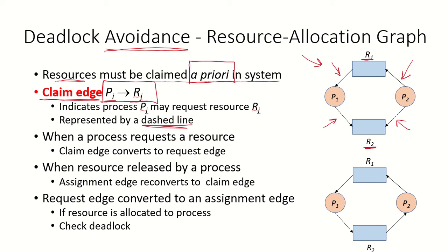Whenever a process requests a resource, the claim edge is converted to a request edge. For example, P2 currently has a claim edge to R2 shown as a dashed line, but when it actually requests the resource, this claim edge will be converted to a request edge. Whenever a process releases a resource, the assignment edge is reconverted to a claim edge. So currently R1 is assigned to P1, but when P1 releases R1 and no longer requires it, the assignment edge will be converted back to a claim edge represented by a dashed line again.